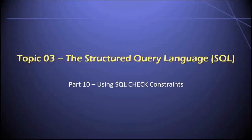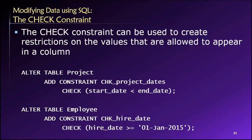Hey everyone, welcome back. In this video, part 10 of topic three in our database class, I'm going to show you how you can use the SQL check constraint to try to protect the quality of the data in your database tables. The basic idea is that we want to check whether or not a proposed value for a column is acceptable. We can essentially establish a new constraint that will limit the acceptable values for any of the columns in a table, and the purpose is to protect the quality of the data.